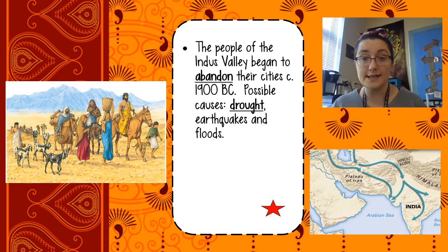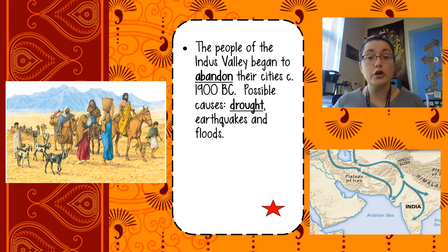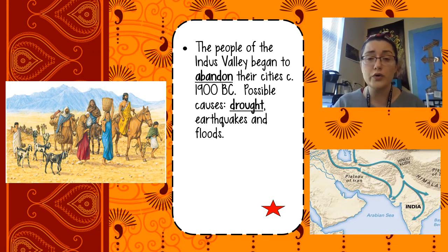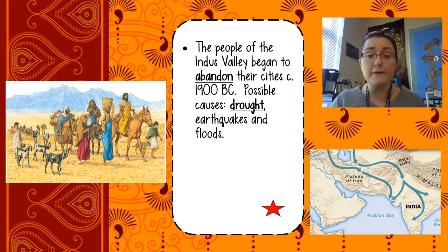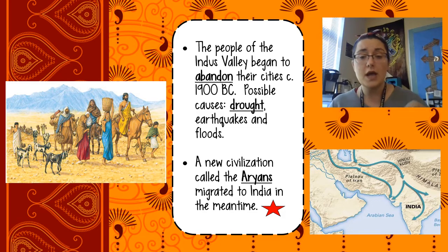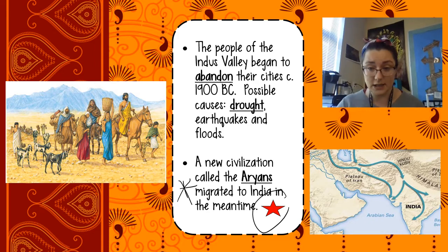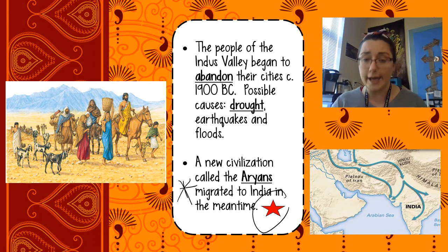About 1900 BC, the people of the Indus Valley began to abandon their cities. We're not really sure why they left, but we do have some possible causes — there could have been an earthquake or flood, the rivers could have changed course making it harder to bring water, or there could have been drought. For a long time those cities stood unused. But in the meantime, a civilization called the Aryans migrated to India — I want you to put a star and circle this, because most of Indian culture today started with the Aryans.